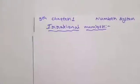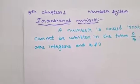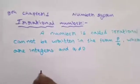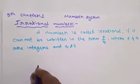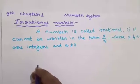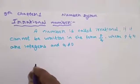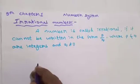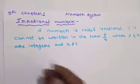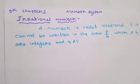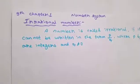Next is irrational numbers. A number is called irrational if it cannot be written in the form of p by q, where p and q are integers and q is not equal to 0.